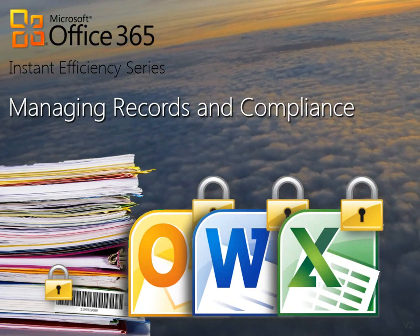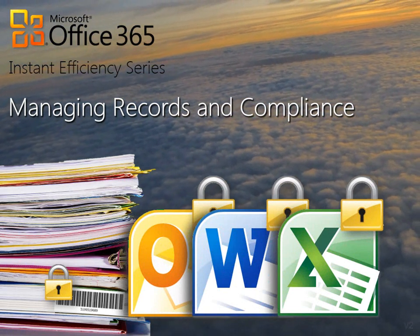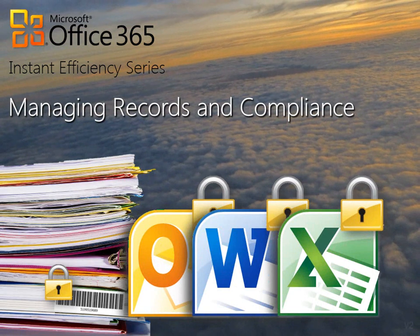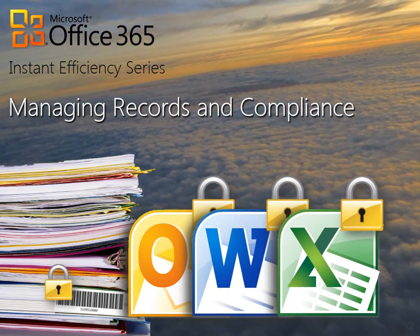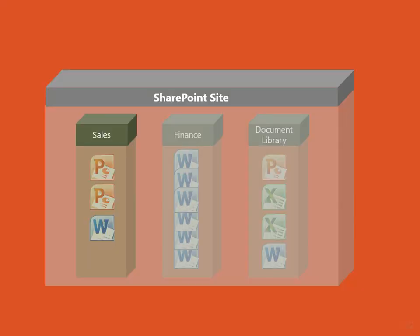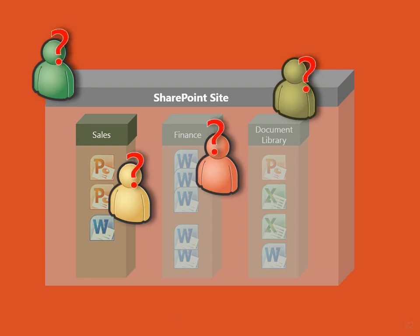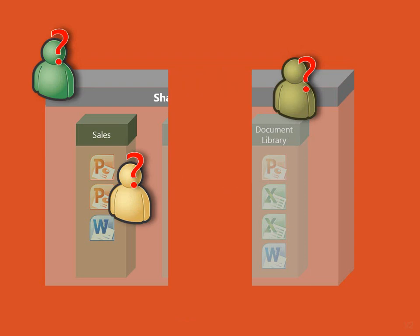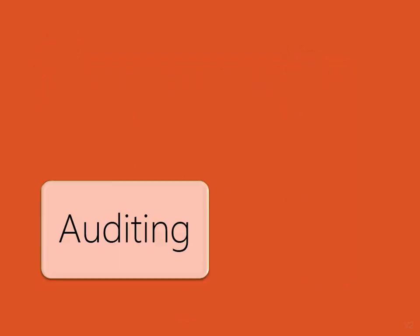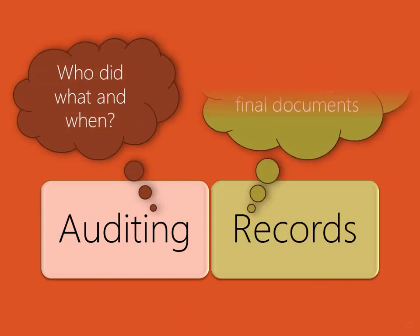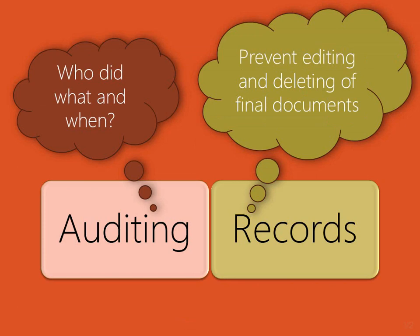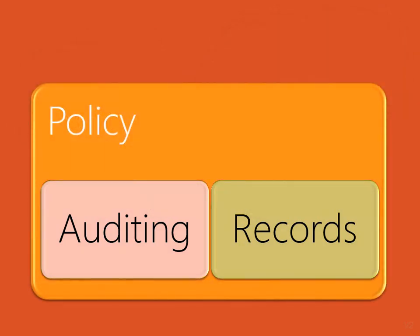Welcome to the Instant Efficiency series. In earlier videos we saw how to organize documents and apply security settings, but what about accountability? If an important document is deleted, how will you find out who did it? SharePoint gives you three convenient ways to handle such situations: auditing, which tells you who did what and when; records, which prevent finalized documents from being edited or deleted; and both these are controlled by policies which you set.